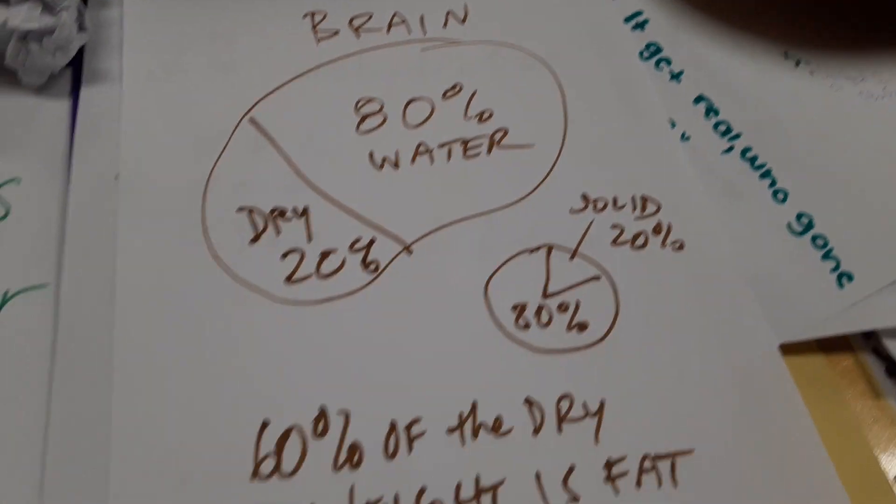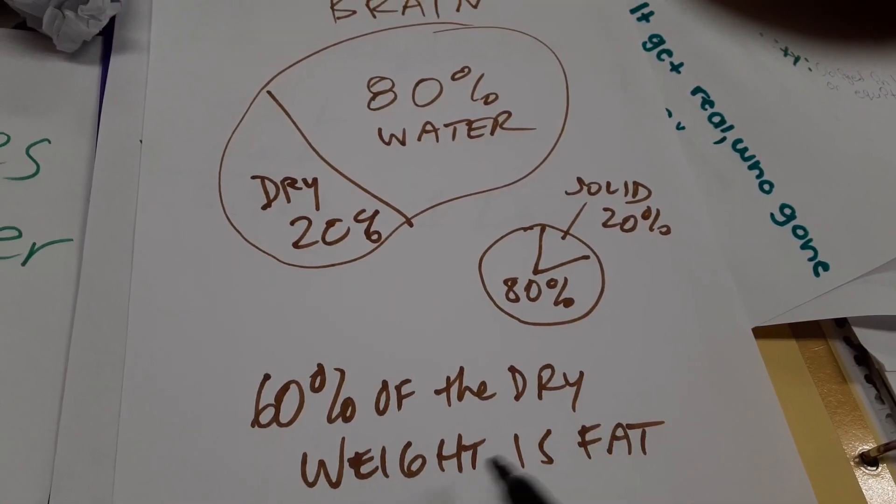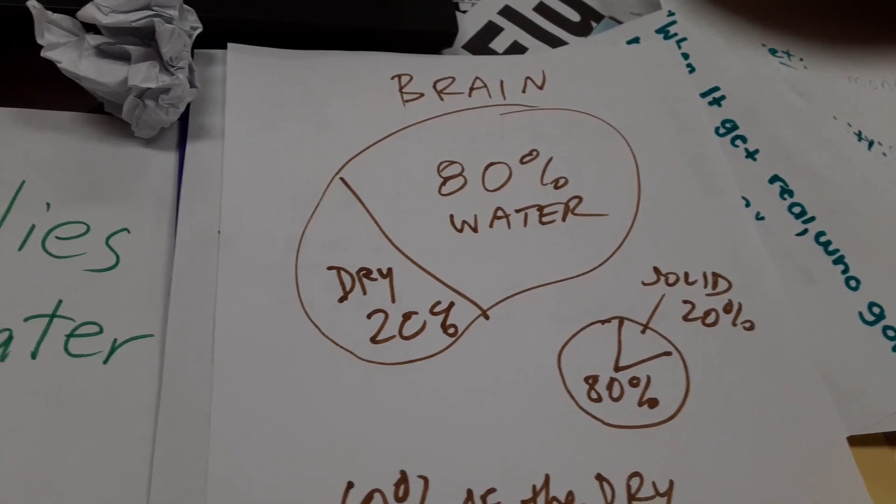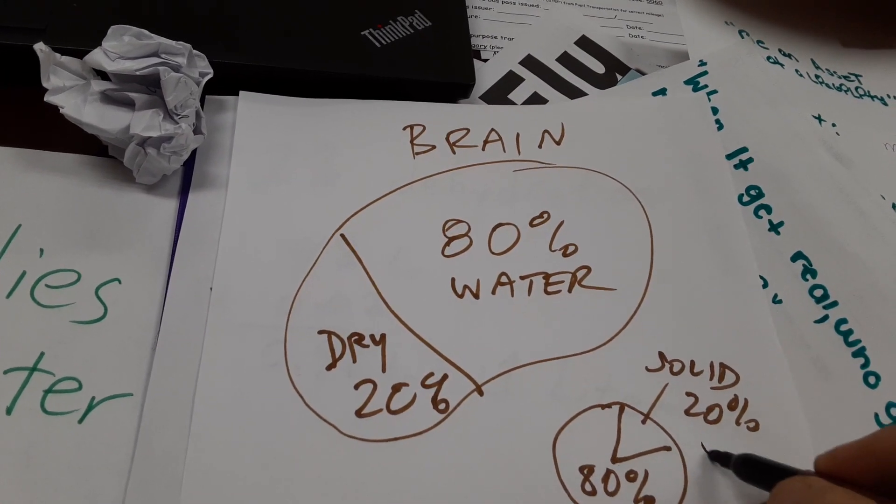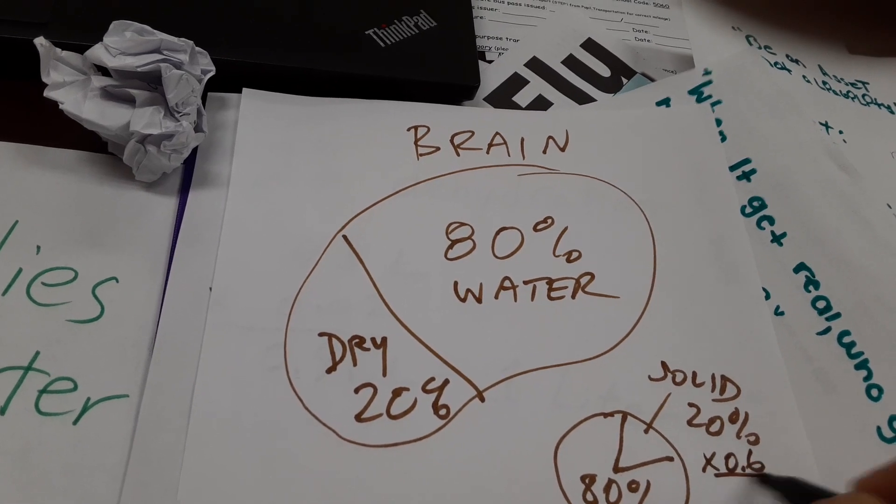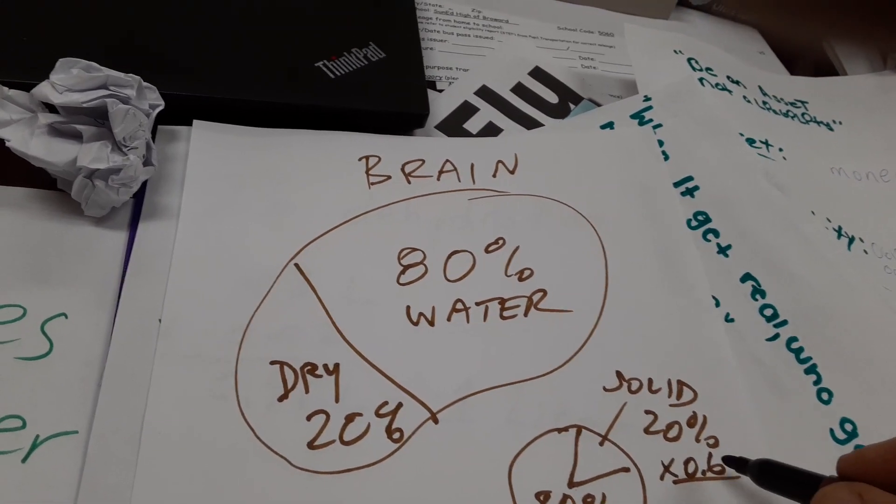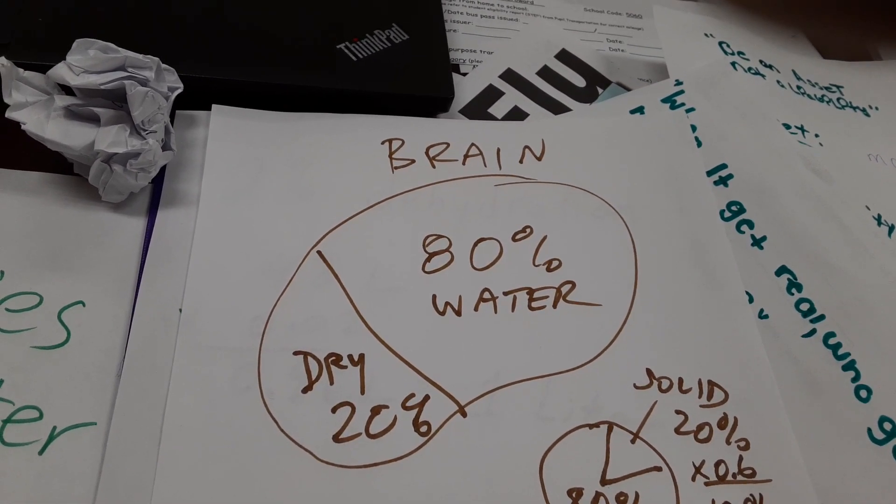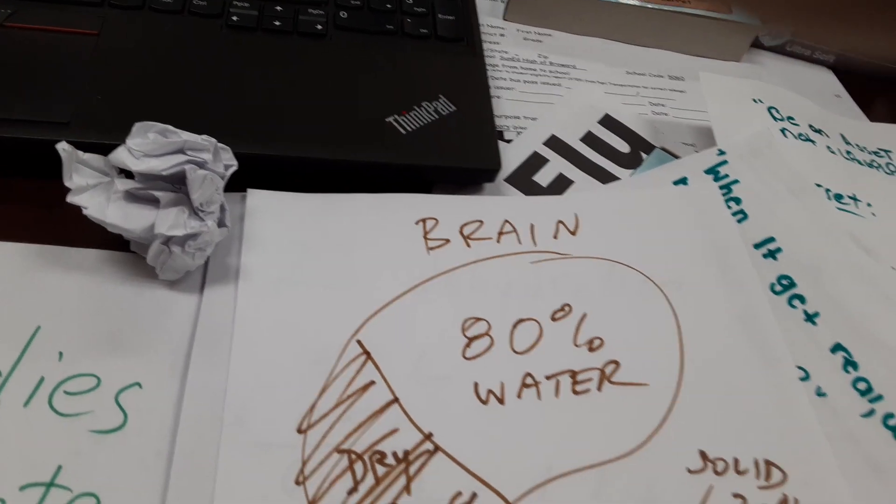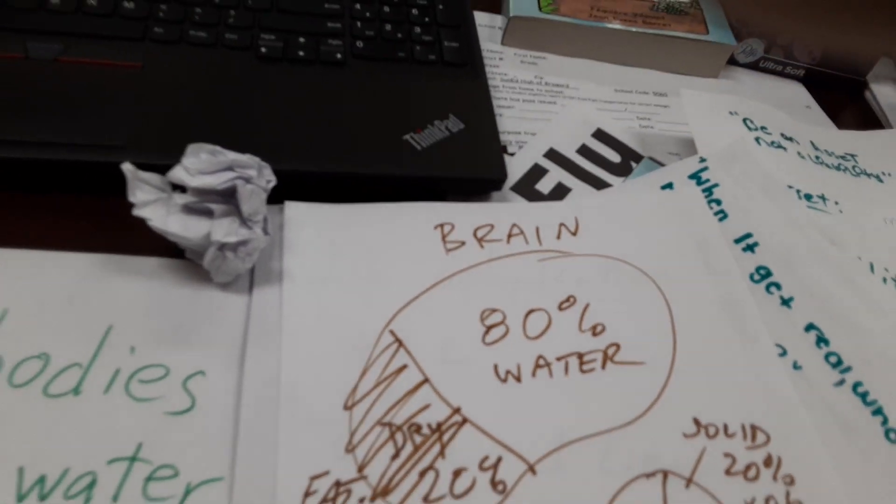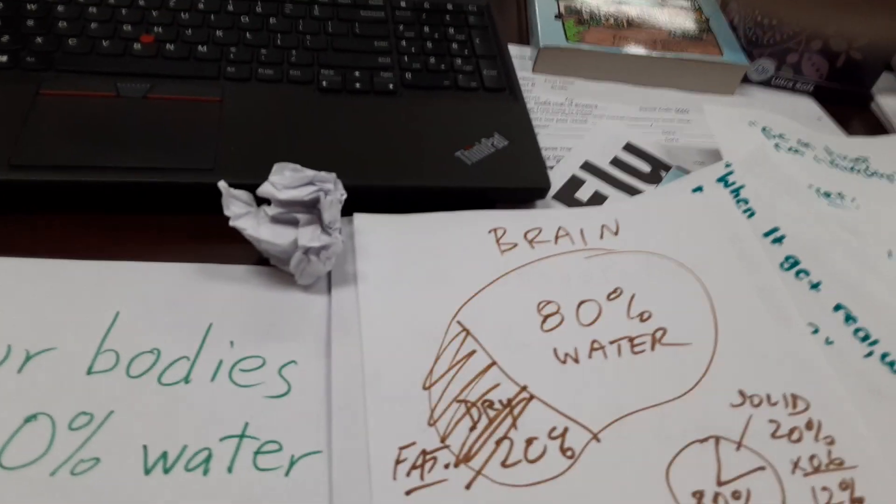Out of that 20 percent, 60 percent of the dry weight is fat. So how do we calculate this? 20 times 0.6 gives me 12 percent. 12 percent of the total brain is fat. And that's the important thing. That's why we need to eat nuts.